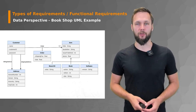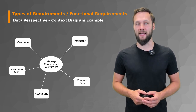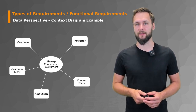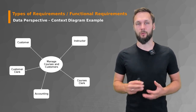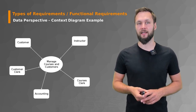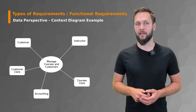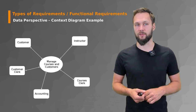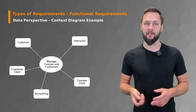Moving ahead, we briefly look at context diagram examples, where in the middle you have a larger requirement piece — something like managing courses and customers — representing what you want from a functional perspective. Different context parameters influence this functionality. For example, to manage courses and customers you have relationships to customers, a customer clerk, accounting, course clerks, and instructors.